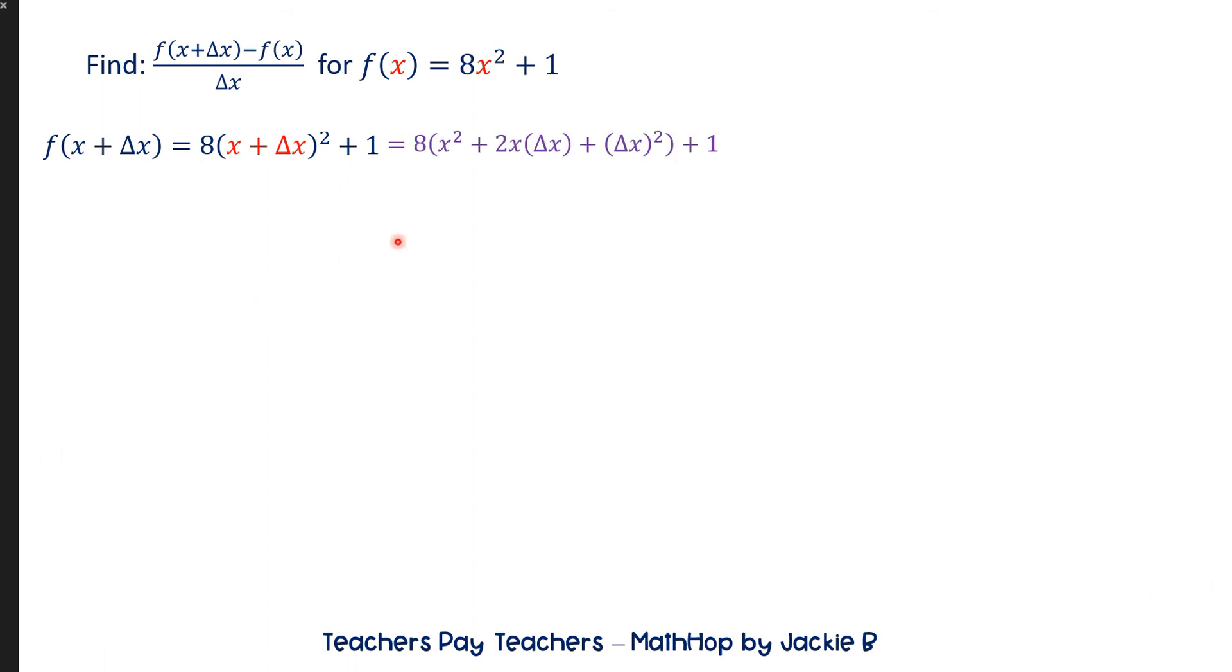So let's go ahead and simplify this. We get, when we square this binomial, we get x squared plus 2x times delta x plus delta x squared, and then plus 1. And remember the 8 is still here, so we'll have to distribute 8x squared plus 16x delta x plus 8 delta x squared. So let's put that there.